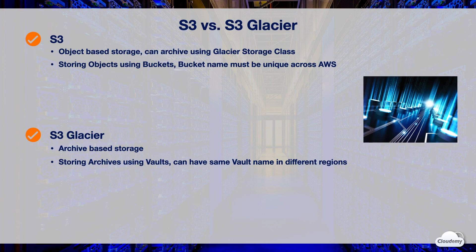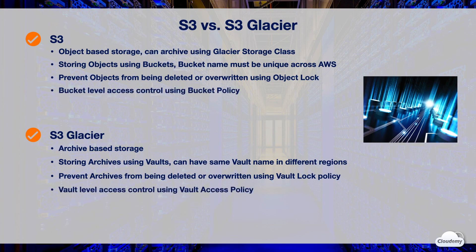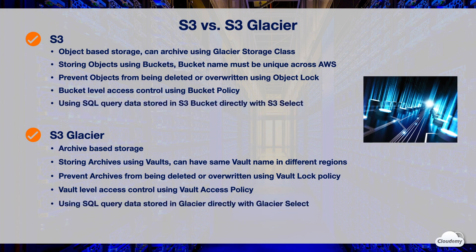S3 Glacier is archive storage — secure, long-term storage for archives only. S3 uses buckets as containers; bucket names must be unique across all AWS accounts. S3 Glacier uses vaults as containers; you can create vaults with the same name in different regions. In S3, you can prevent objects from being deleted or overwritten using object lock. In Glacier, you prevent such operations using the vault lock policy. Bucket policy and vault access policy are both resource-based policies controlling access at their respective levels.